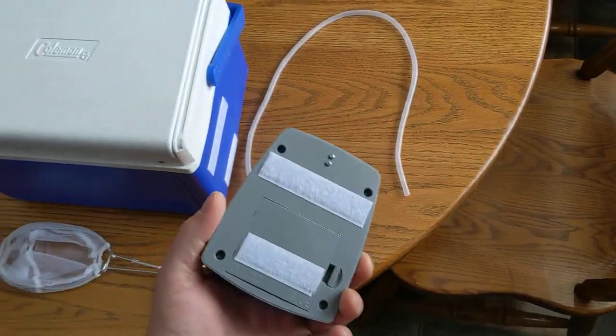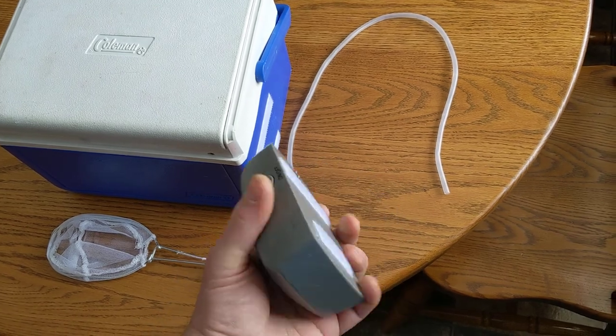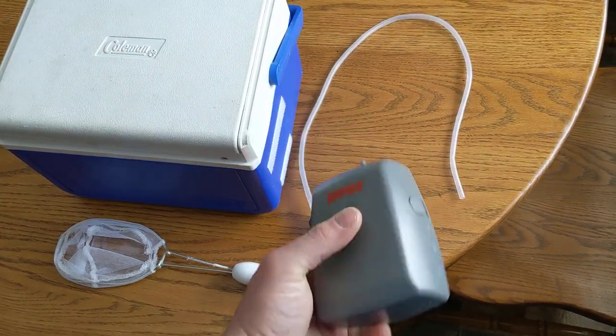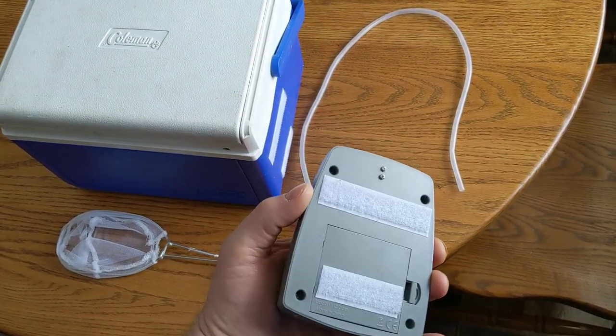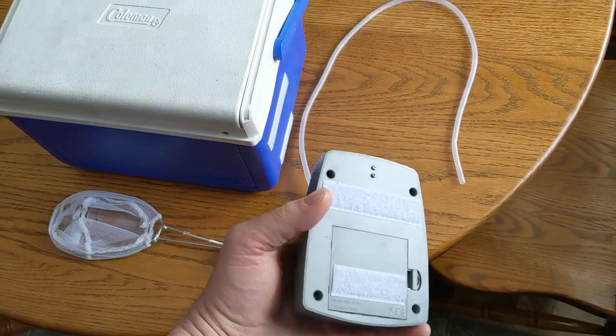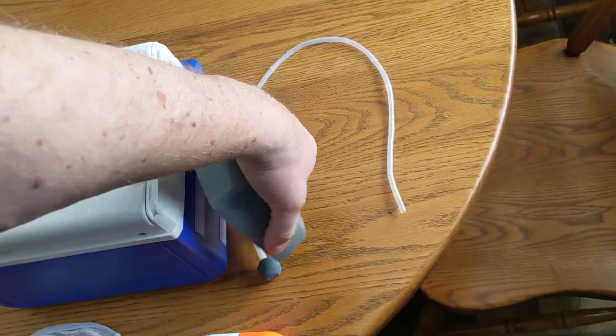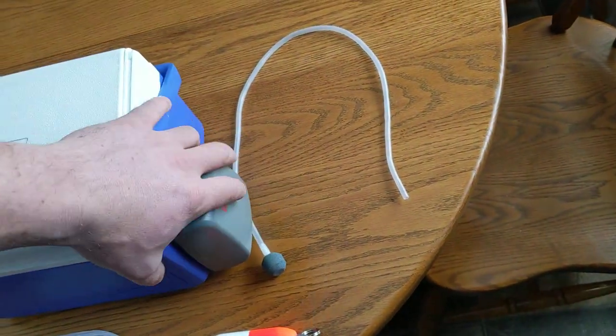So before I even was able to use this, the clip on this broke. I was initially just going to clip it to the side here, but instead of that I put a self-adhesive velcro on the side of the pail and on the aerator and it just fastens on like that.